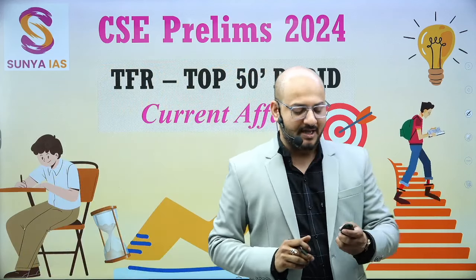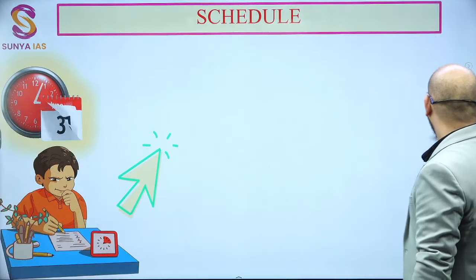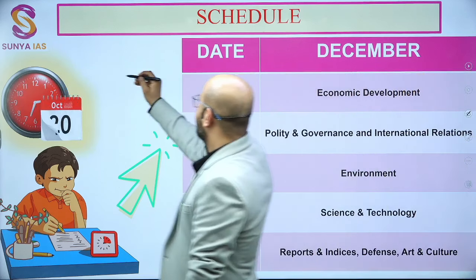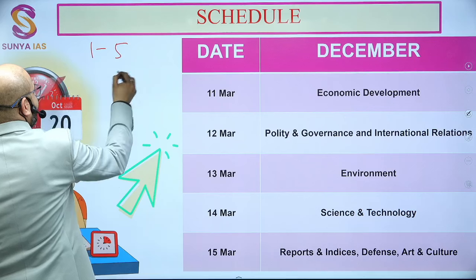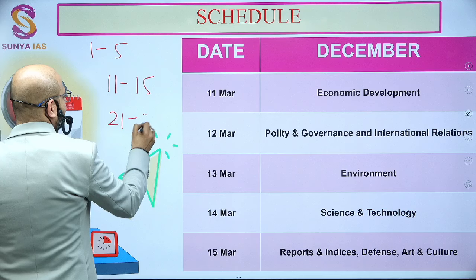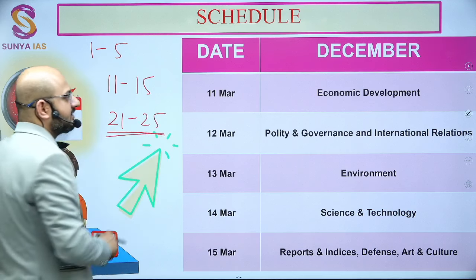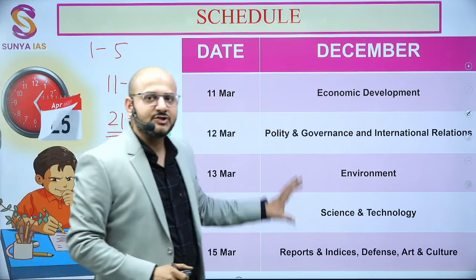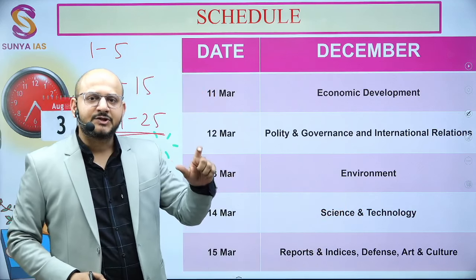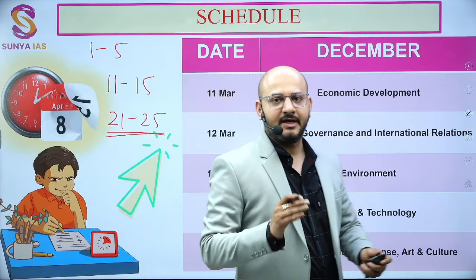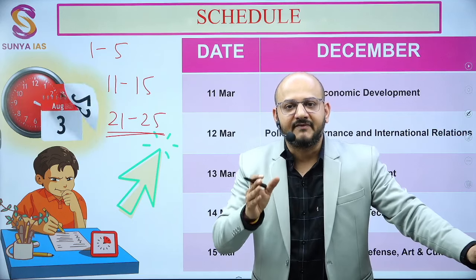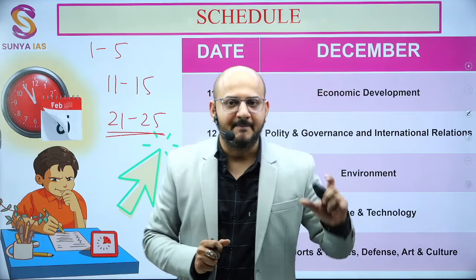The manner in which we have been doing this is that each month's current affairs we cover in segments: 1 to 5, 11 to 15, and 21 to 25. All these topics have been segregated in such a manner that they are important for the examination, covering contextual and factual information so that you can answer peripheral questions as well.